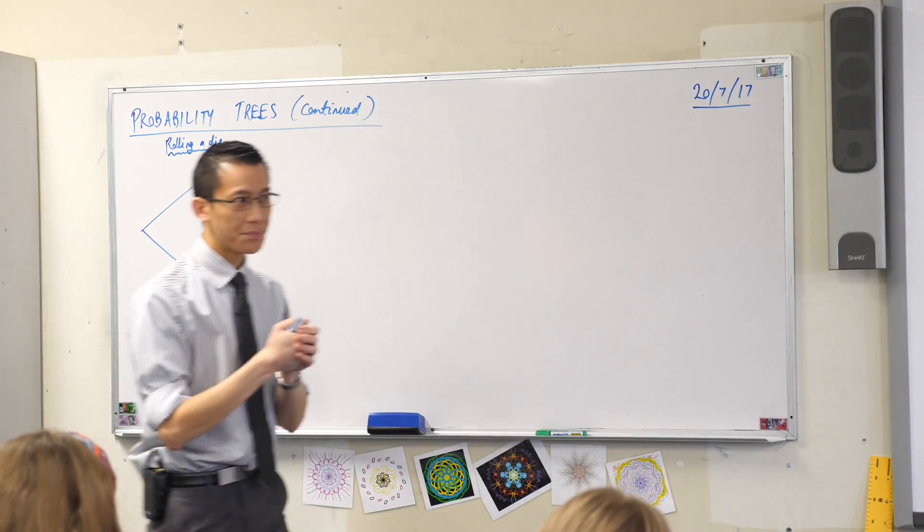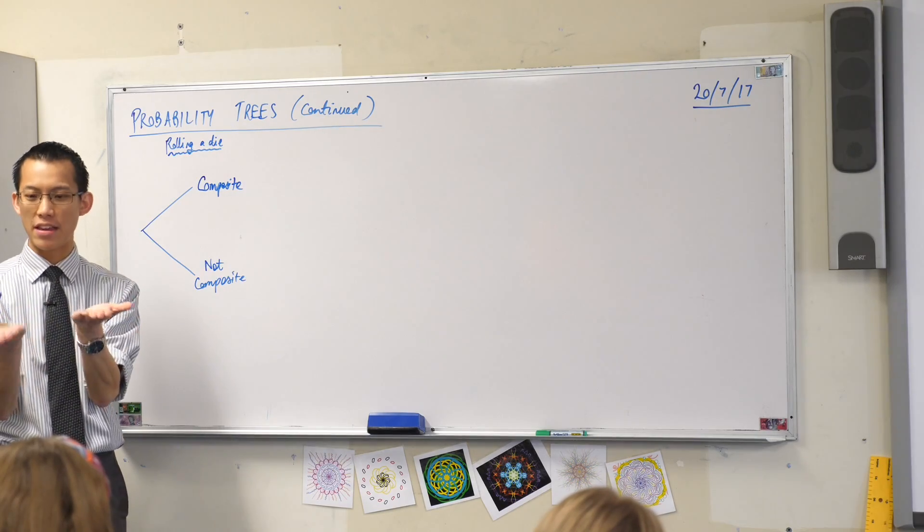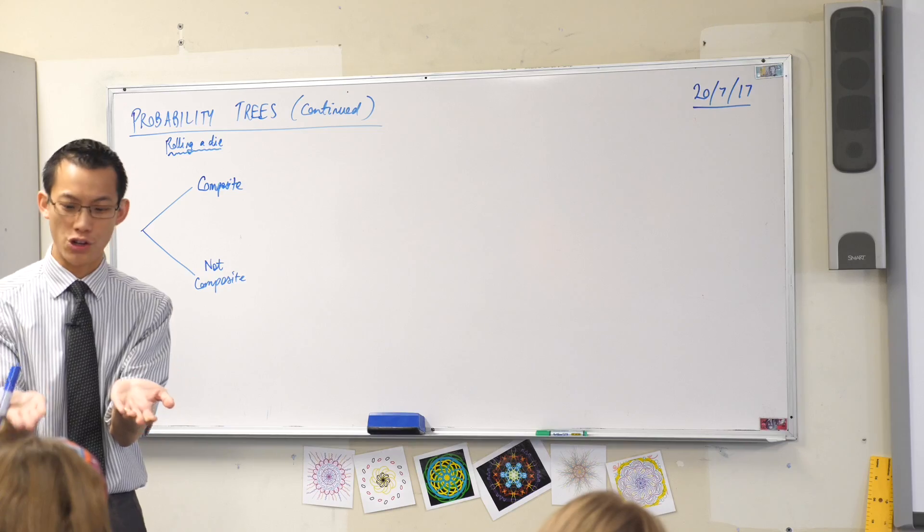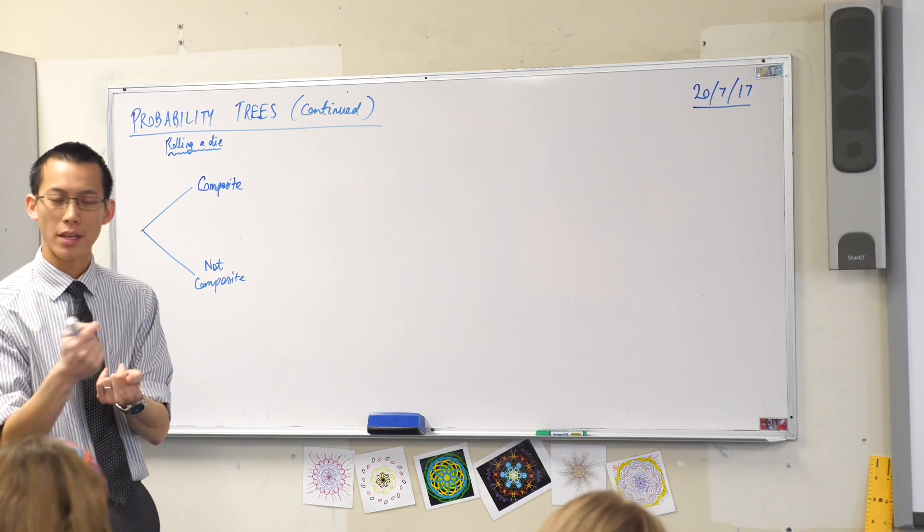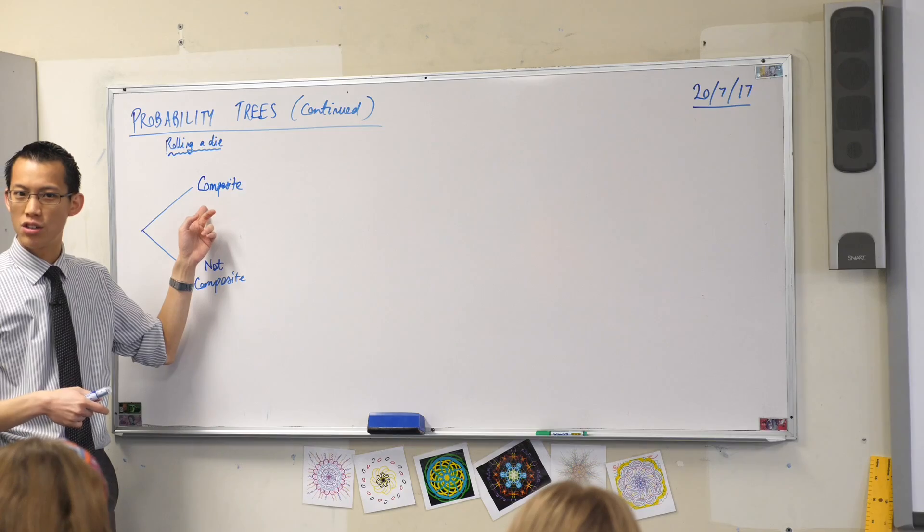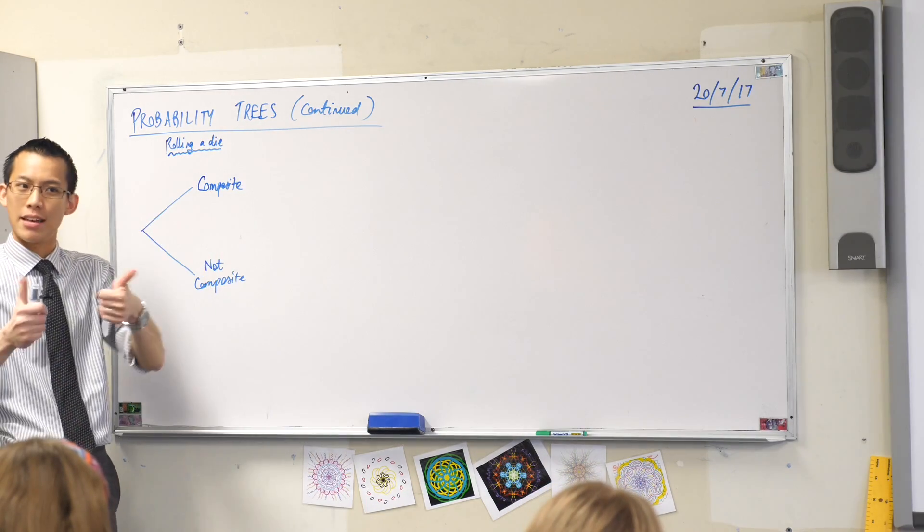So for example, two is not a composite number because when you write that as something times something, what would you write it as? One times two. There's no other way to write it. You can't avoid writing one. On the other hand, six is a composite number because you can write it as two times three and you've avoided one.